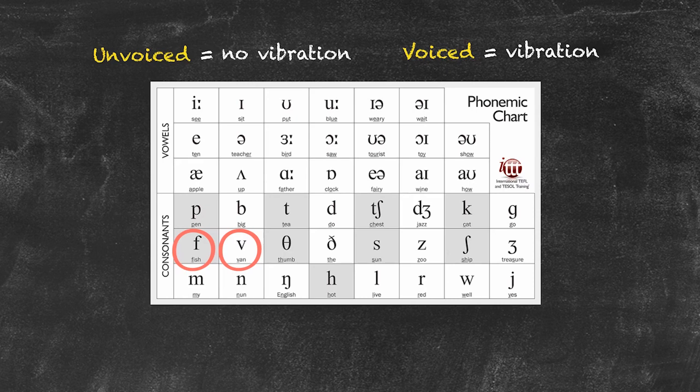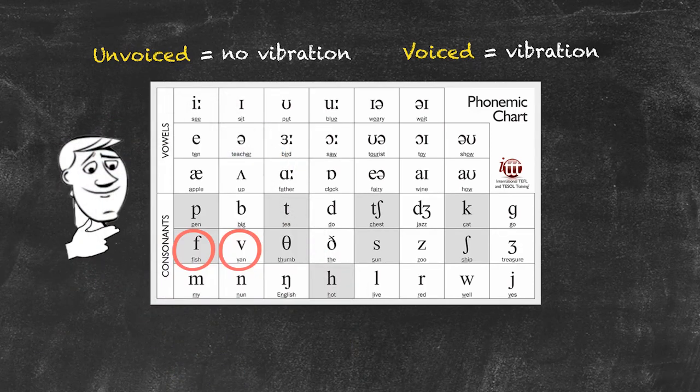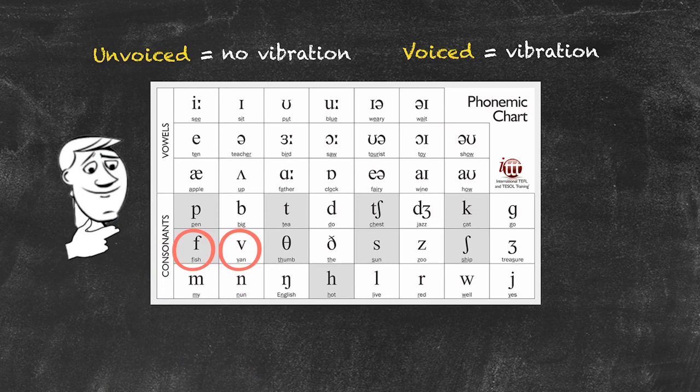We can articulate this to our students by asking them to simply place two fingers over their throat and feel the difference between F and V.